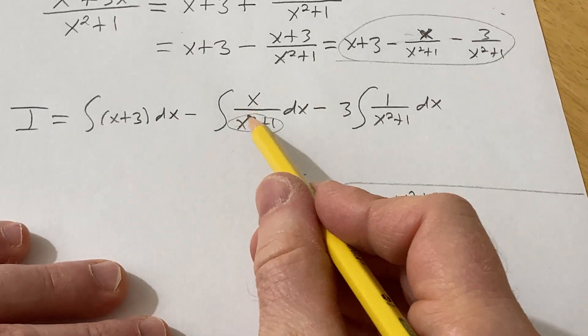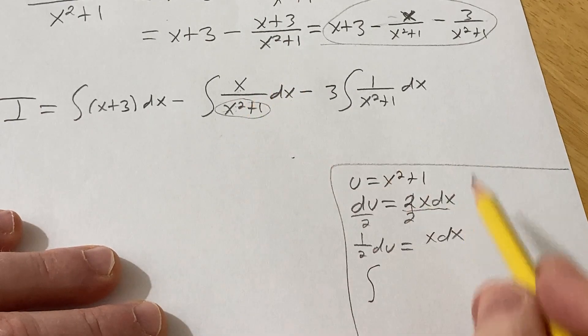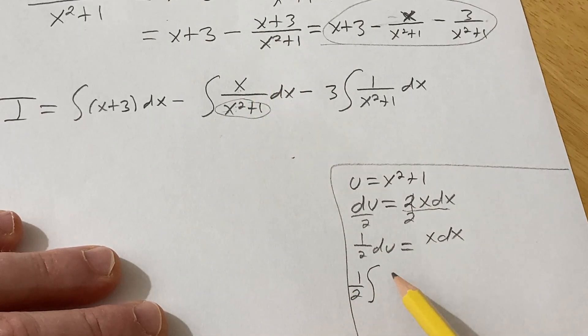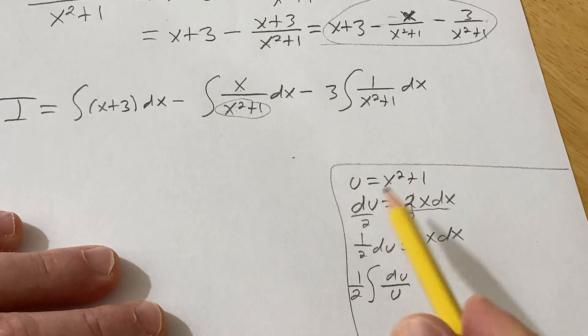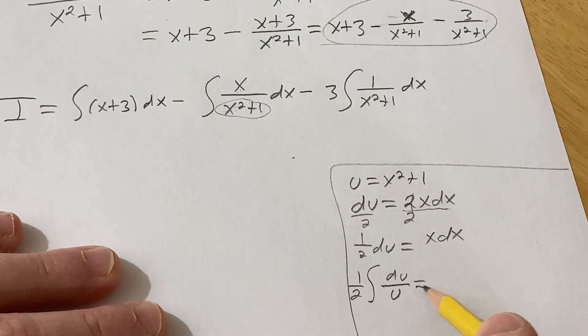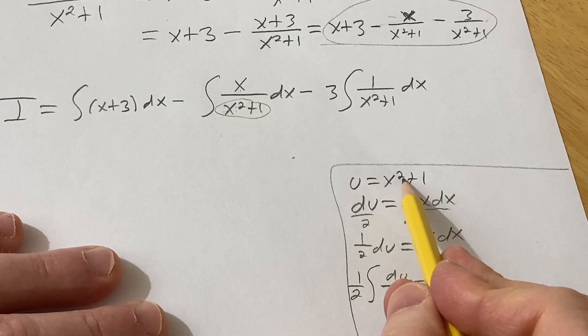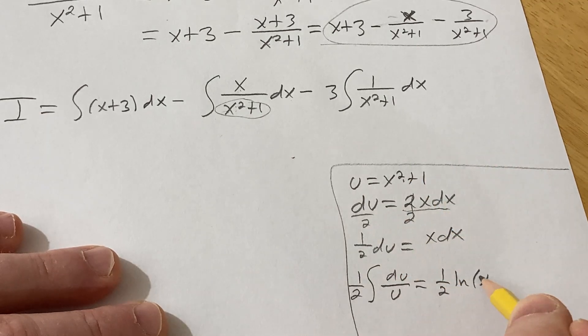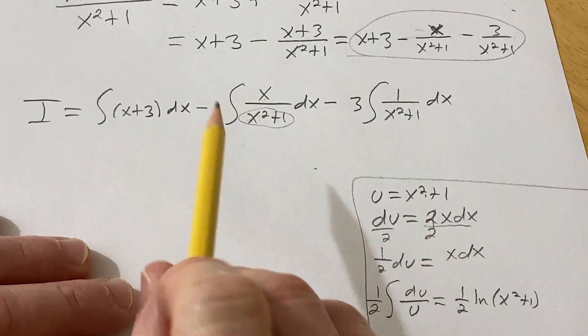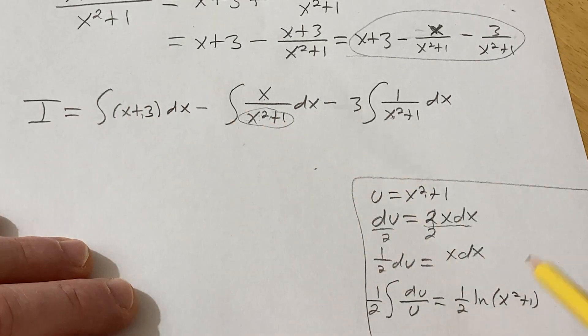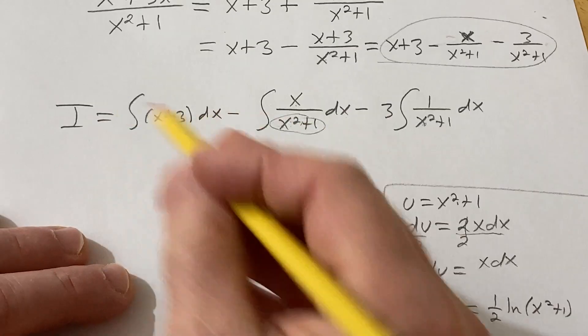So now this thing here is going to become the x dx is 1 half du. And the bottom there is a u. Because u is equal to x squared plus 1. So this integrates to 1 half natural log absolute value of u. Which is absolute value of x squared plus 1. But you don't really need the absolute value because x squared plus 1 is positive. I'm going to write the constant here at the end.